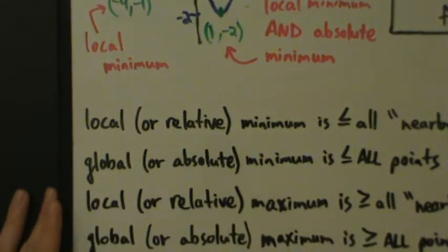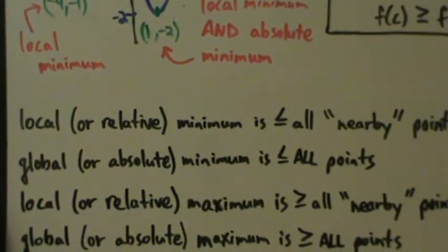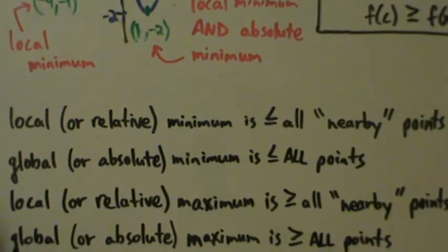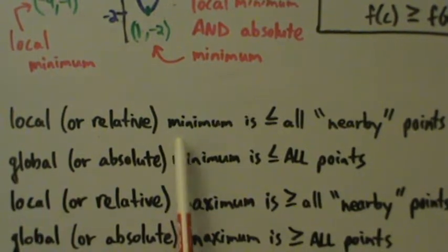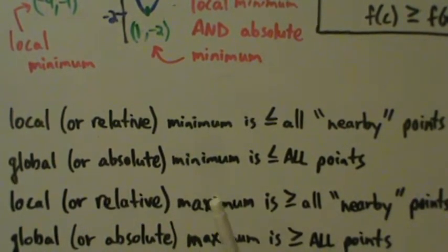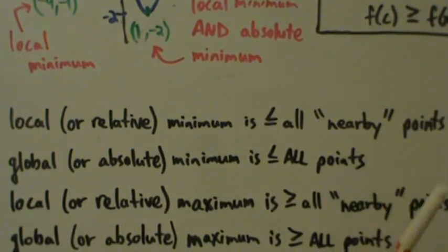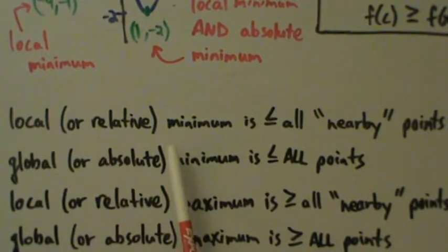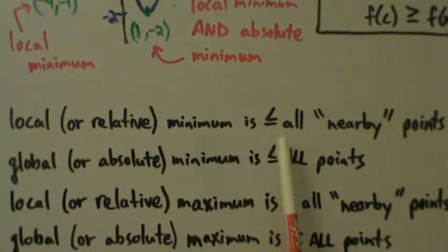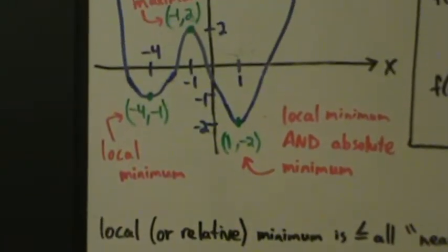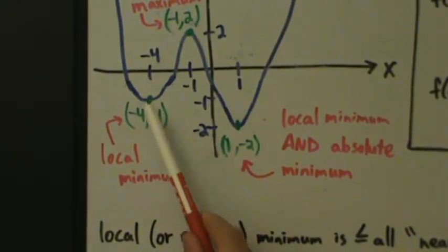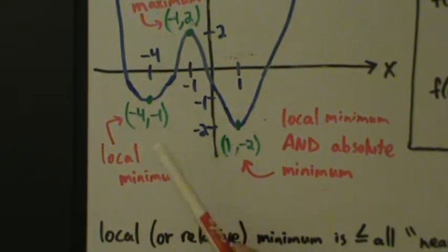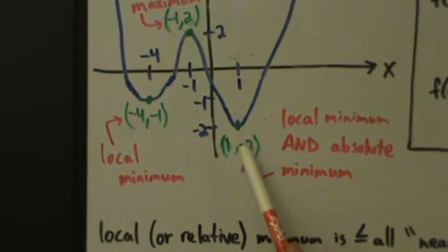A local or a relative minimum is basically less than or equal to all nearby points. Local and relative mean exactly the same thing — they're completely interchangeable. So if you say local min or relative min, it's exactly the same thing. A local or relative min is less than or equal to all the nearby points. If we look at all the points nearby, this is the smallest one — it's less than or equal to all the others nearby. Likewise with the other local min.